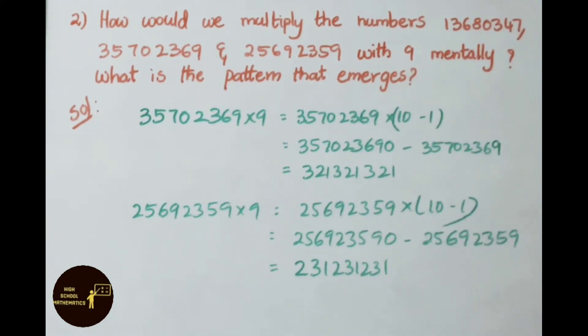See the next number: 2 crore 56 lakh 92359 multiplied by 9. So 9 can be written as 10 - 1. So given number after multiplying by 10, we get 25 crore 69 lakh 23590.